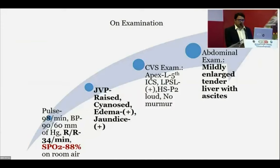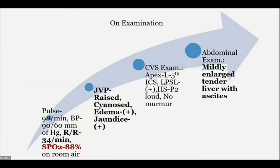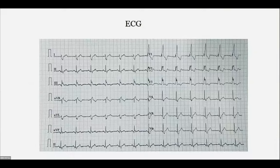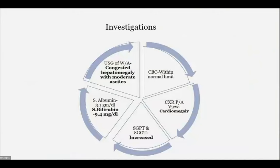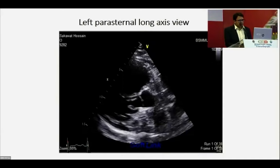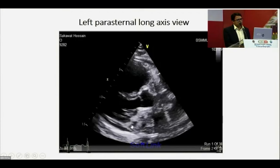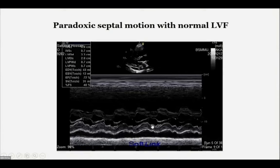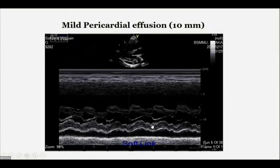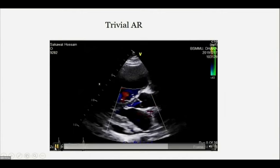On examination: low blood pressure, tachypnea, hypoxemia, raised JVP, cyanosis, edema, and icterus. Cardiovascular exam revealed left parasternal heave and loud P2. Abdominal examination showed mildly enlarged liver with ascites — evidenced by positive shifting dullness. ECG showed complete right bundle branch block with S1 Q3 T3 deviation. Investigations revealed cardiomegaly on X-ray, elevated liver function tests, and hepatomegaly with moderate ascites on ultrasonogram. Echo was then performed.